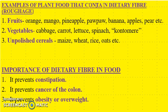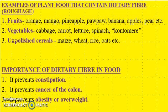Examples of plant foods that contain dietary fibers include fruits such as oranges, mango, pineapple, guava, banana, and apples. We also have them in vegetables such as cabbage, carrots, lettuce, spinach, and cucumber. And finally, we have them in unpolished cereals such as maize, wheat, rice, oats, millet, and sorghum.